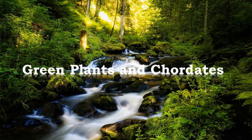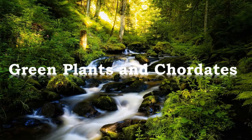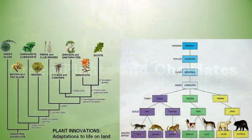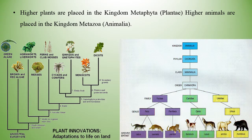Let us take a journey of green plants and chordates. Higher plants are placed in the kingdom Metaphyta, which is also called Plantae, and higher animals are placed in the kingdom Metazoa, which is also called Animalia.